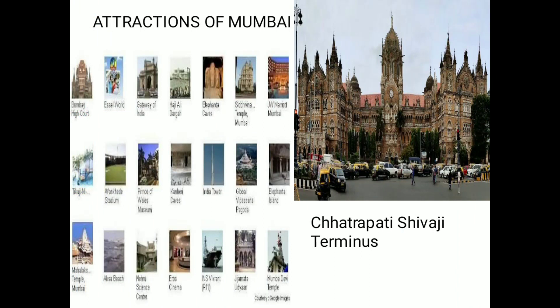You need to remember that Chhatrapati Shivaji Terminus Railway Station is very important. It was designed by a British architect and was built more than 120 years ago. Similarly, recall that Qutub Minar in Delhi was also built around 1,200 years ago — it was built before the Mughal emperors, not by the Mughal emperors.